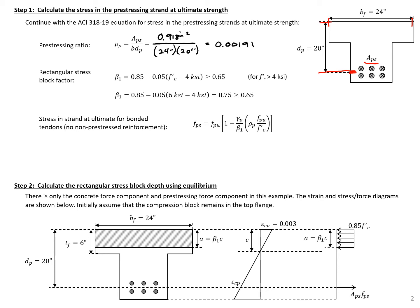Next we need to find our beta 1 factor, our rectangular stress block factor. We have 6 ksi concrete, and plugging 6 ksi into our beta 1 equation, we get a beta 1 equal to 0.75.